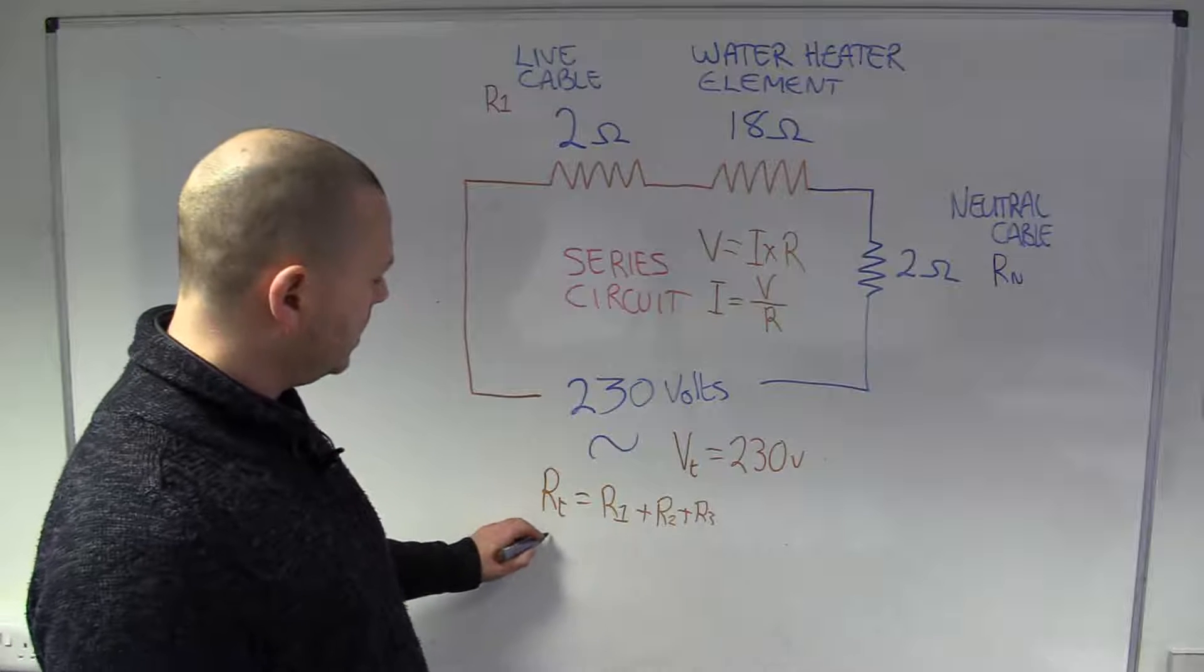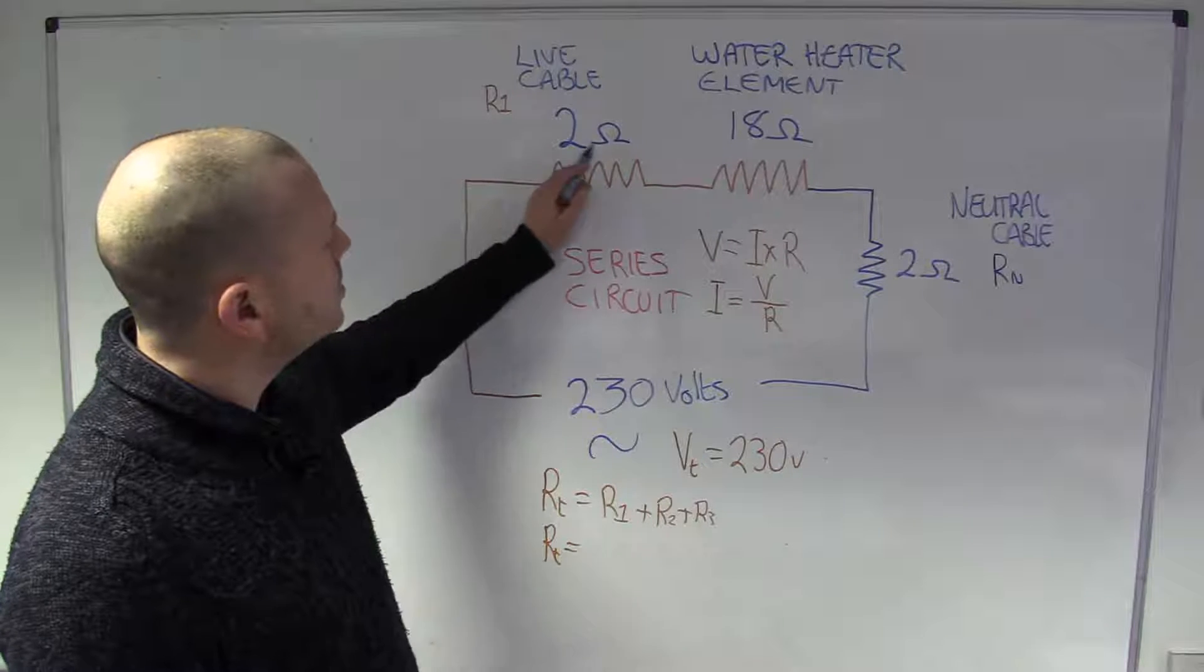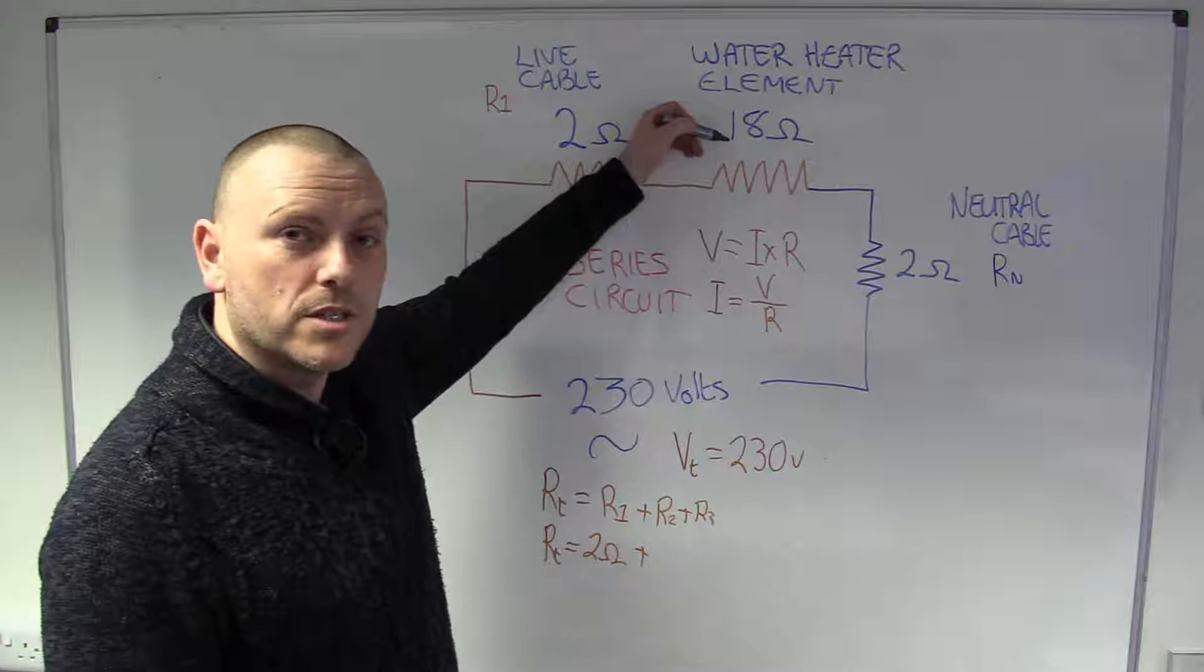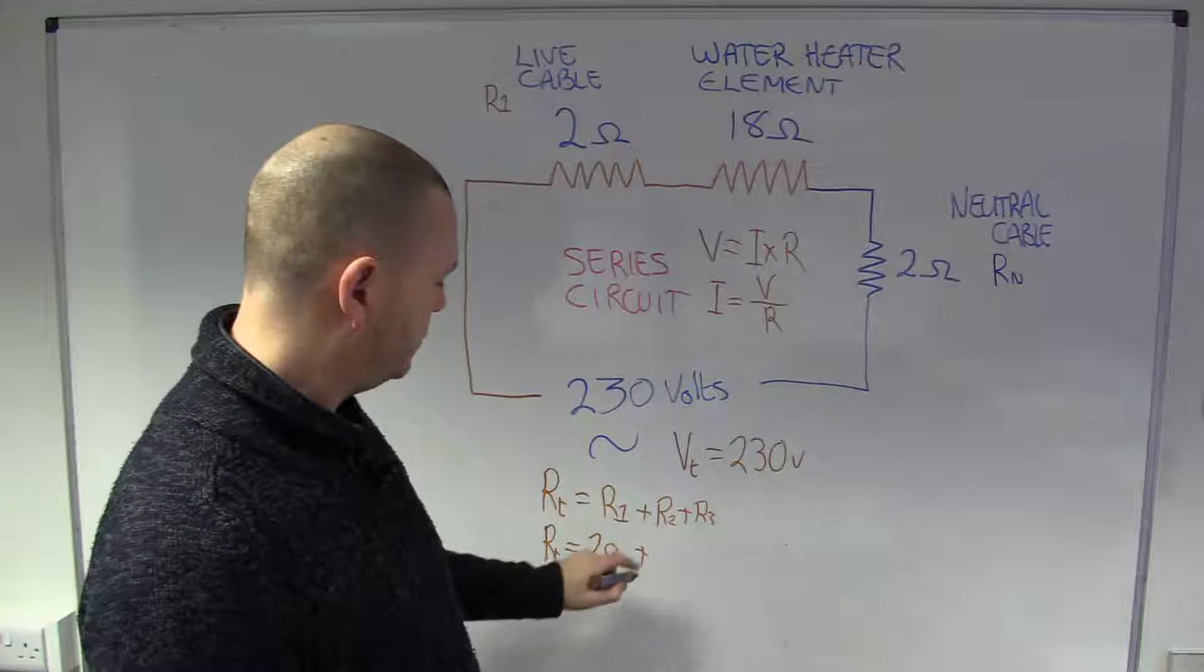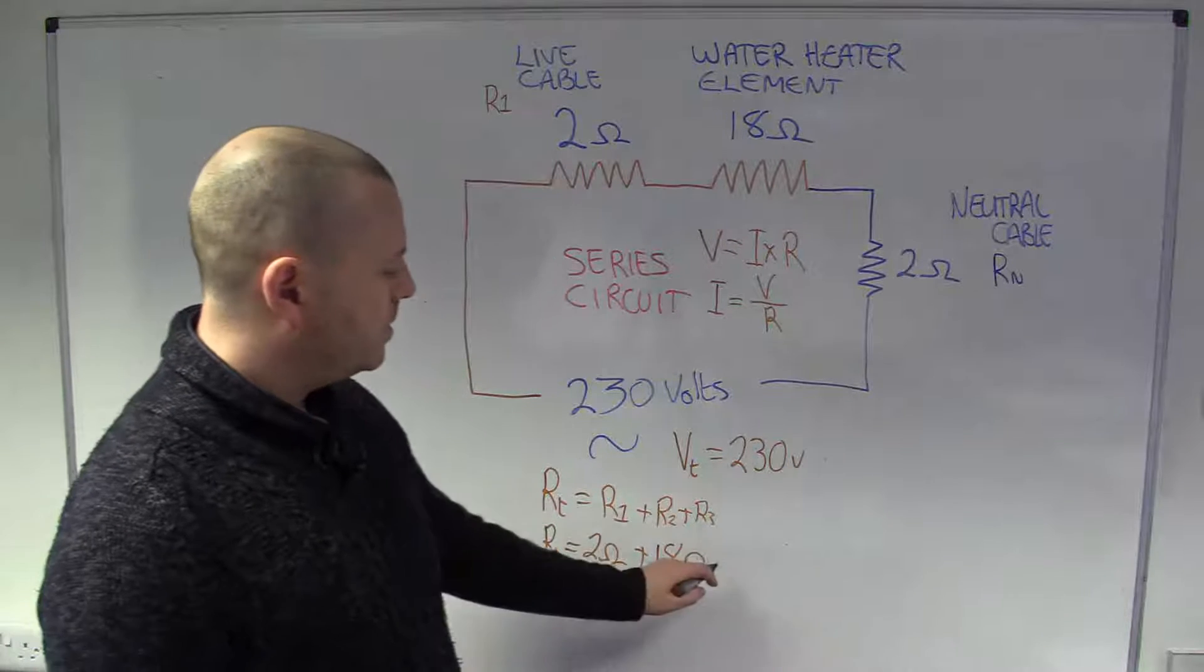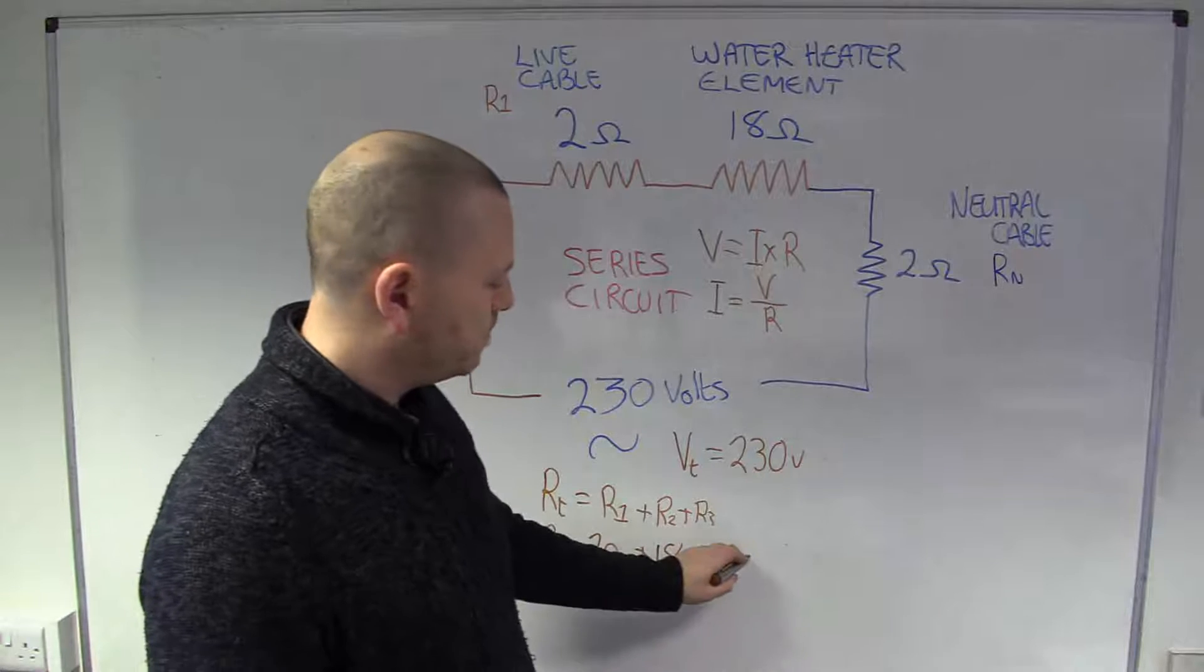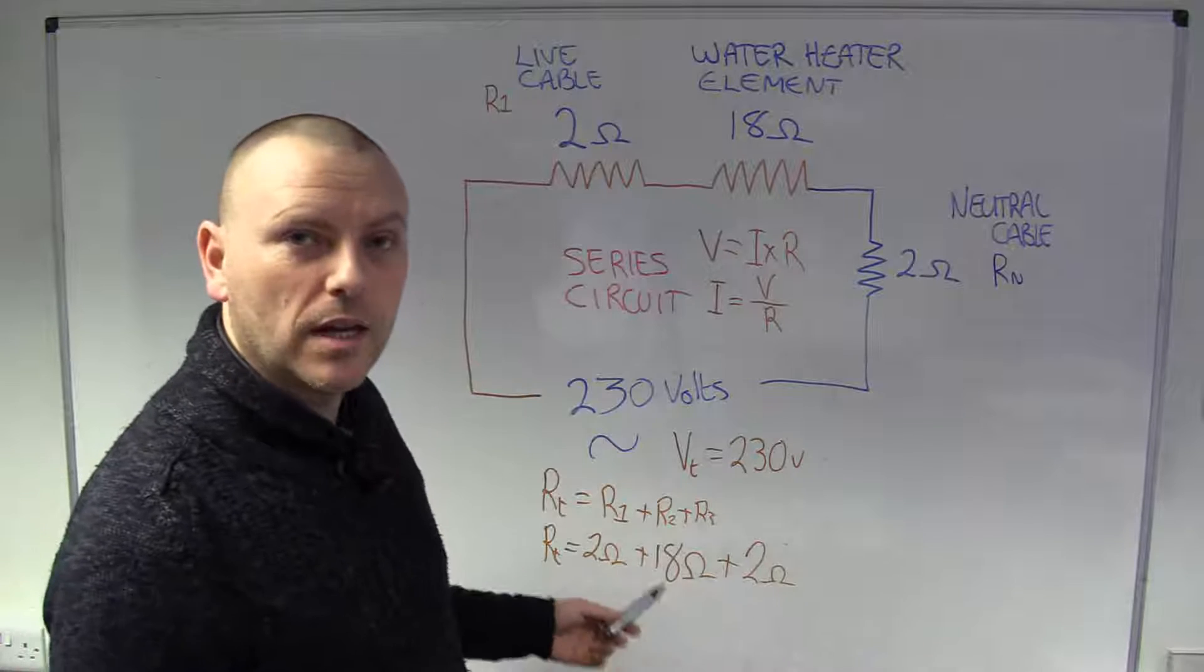So, to calculate our resistance total on our circuit, we've got this resistor, which is 2 ohms, plus this resistor, which is the water heater element in our situation, which is 18 ohms. And then, finally, we've got our neutral cable, or R3, 2 ohms. And we just add them up. How easy is that?